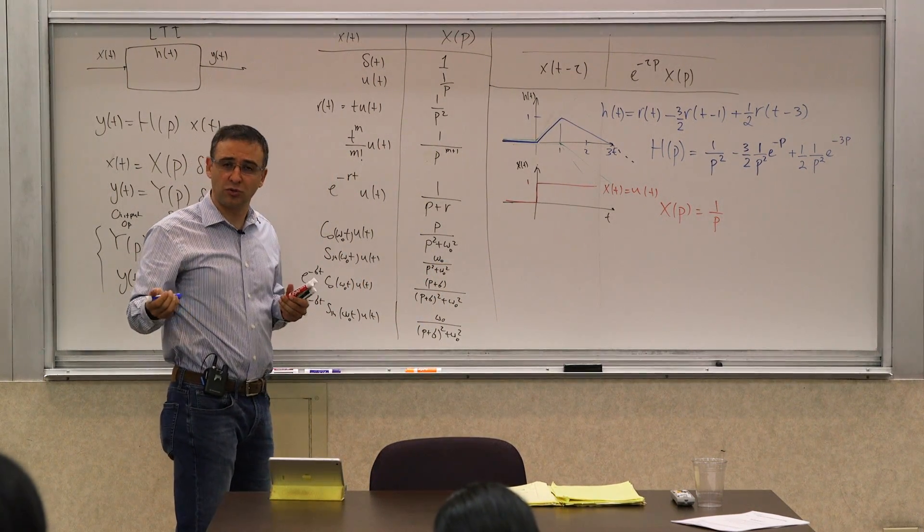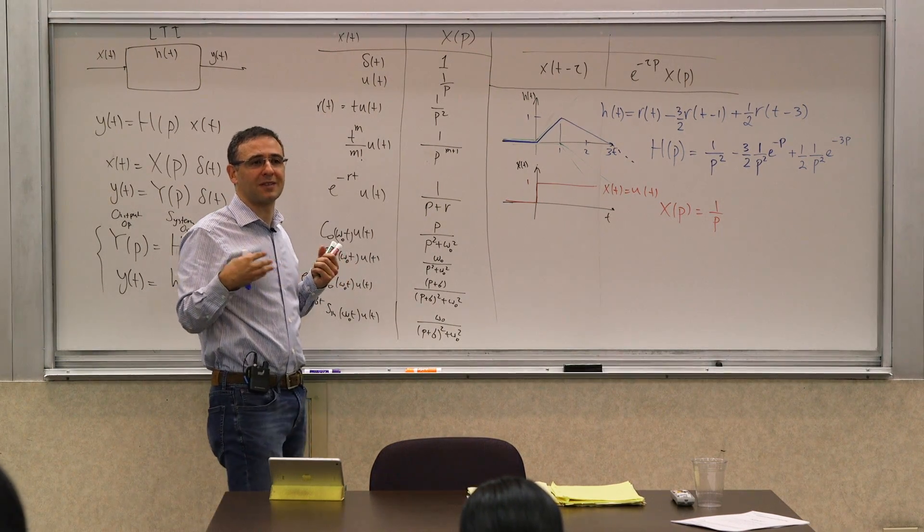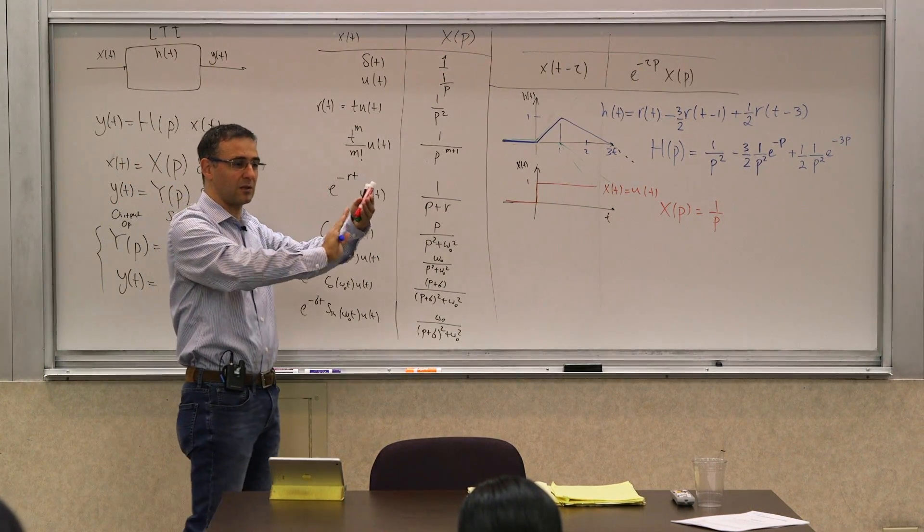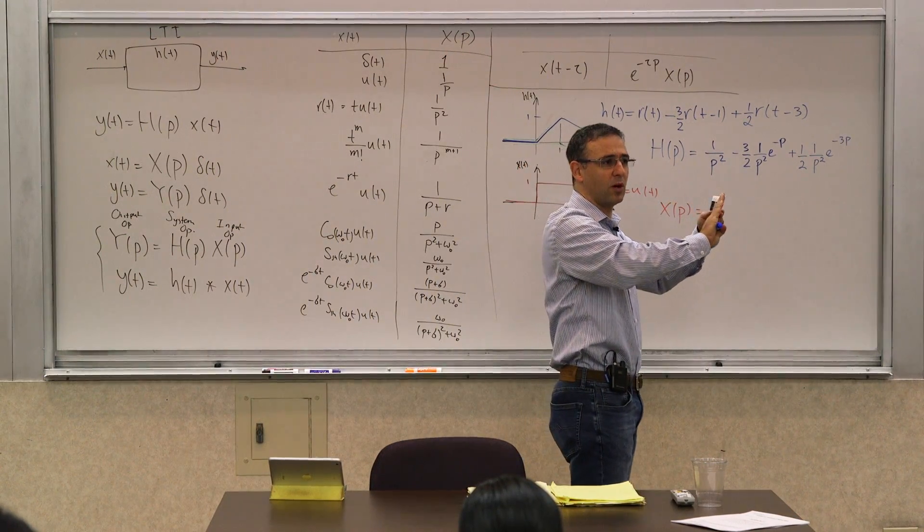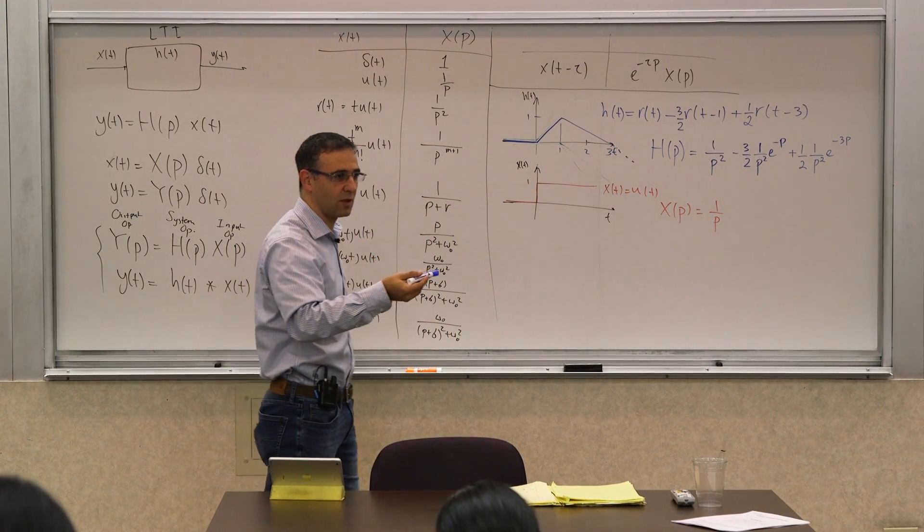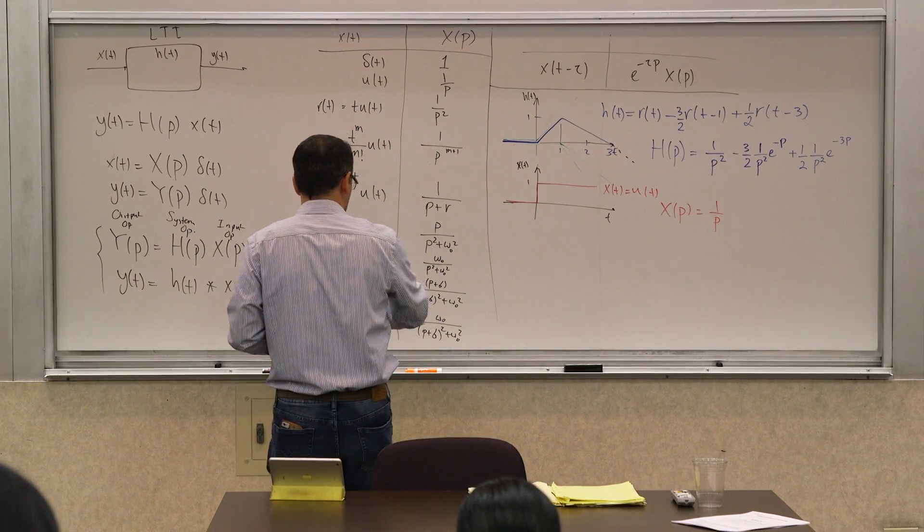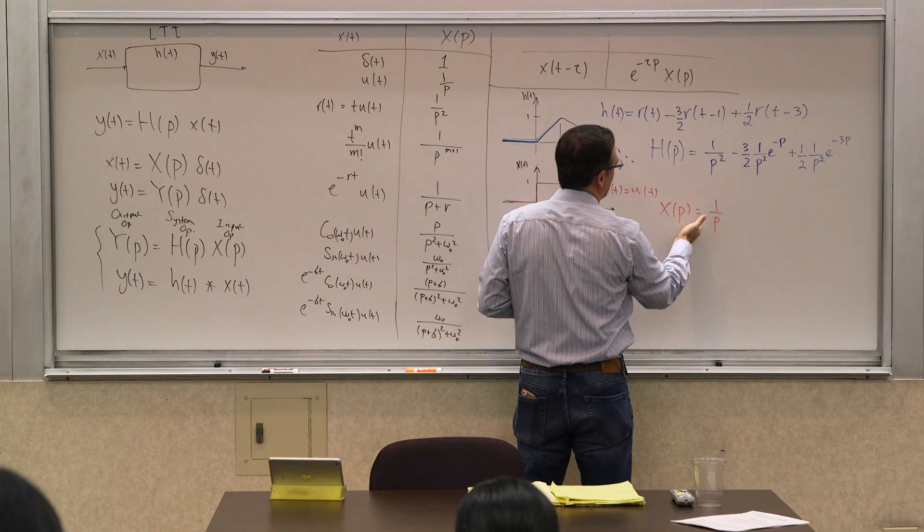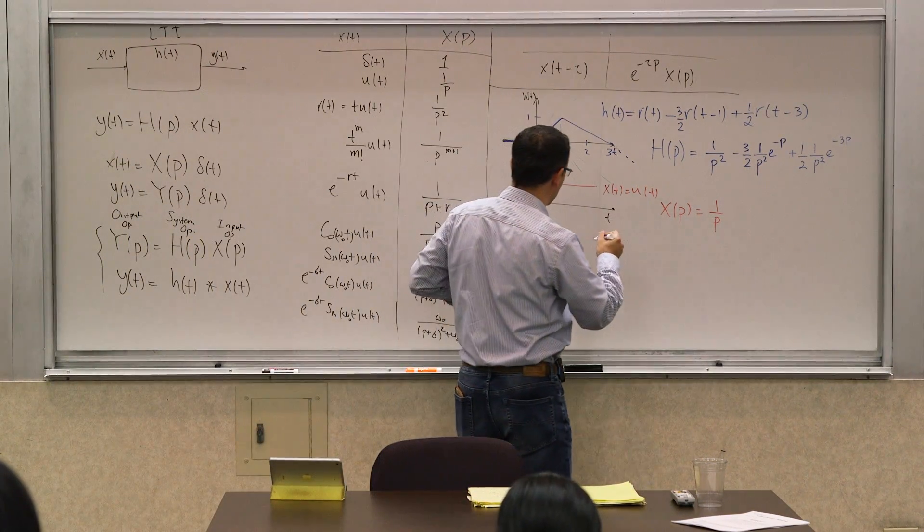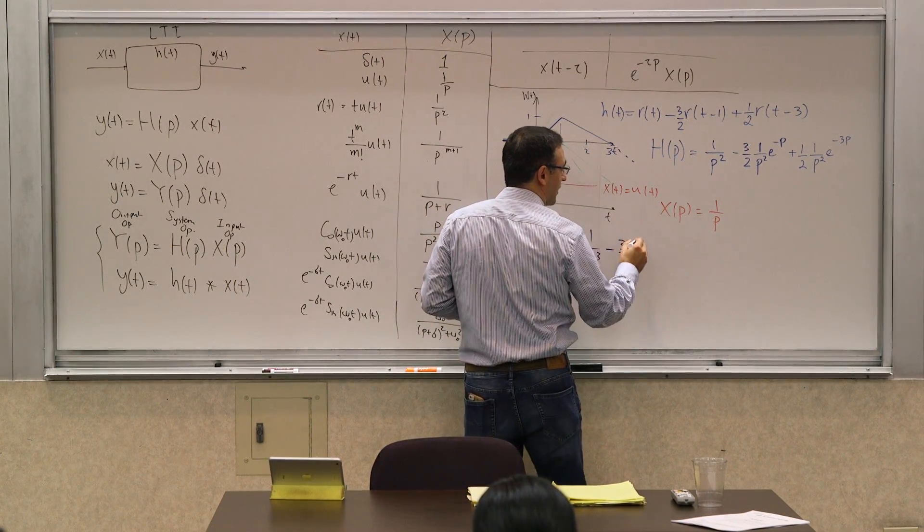Now, if I want to find the output for the system, there are two different ways to go about it. One is the convolution. So you just basically flip one, slide across, look at the area of the product, the overlapping part, and then calculate it as a function of t, and that would give you the answer. You've done similar things several times. You should be proficient in it by now. But in this way, we can do it much more simply. We can actually use this way of calculating, which is the product. And the product is pretty straightforward to calculate. So Y of p is this times that, which makes it 1 over p cubed.